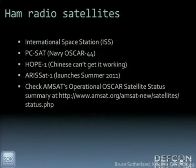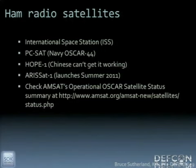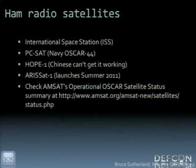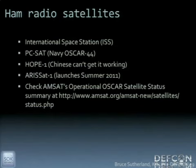As for which ham radio satellites to use, the International Space Station is the best one because it's a stable, manned platform. They have a large and steady power supply, and if anything needs to be rebooted there's someone there to do it. PCSAT is an older satellite created by the Naval Academy, but it's on its last legs — the batteries are shot, it only works in daylight, it doesn't have much transmit power, and you have to have your antenna pointed directly at it. I've tried it about 30 times and only got it to work twice.